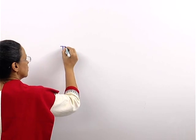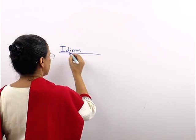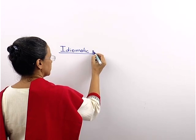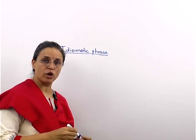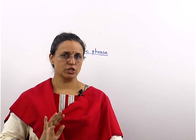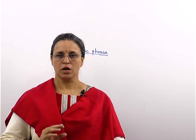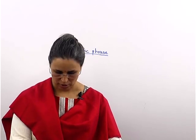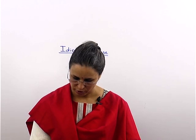Our next topic is idiom, also known as idiomatic phrase. An idiomatic phrase is a way of saying something. A phrase doesn't have a subject or a verb — it is part of a sentence. A phrase or a sentence that has a special meaning as a whole, which may be different from the meaning of the individual words.